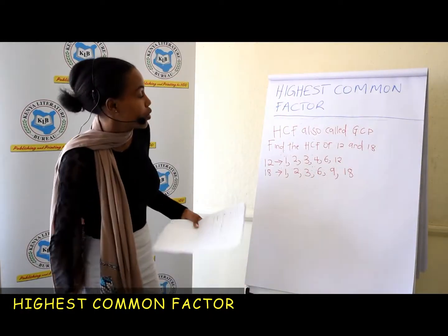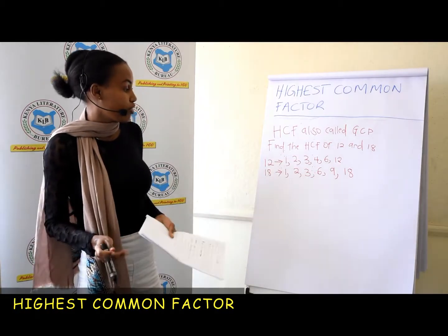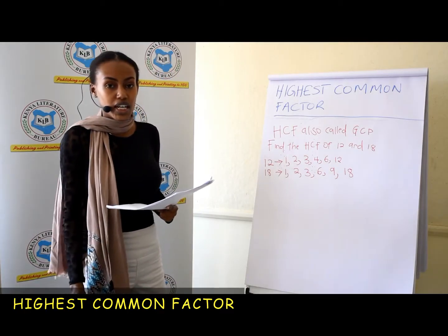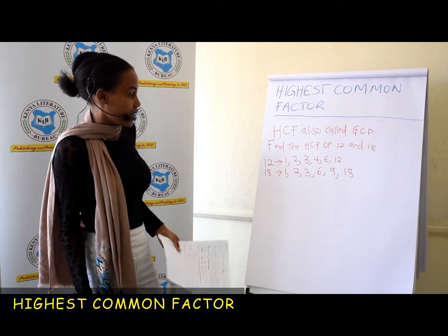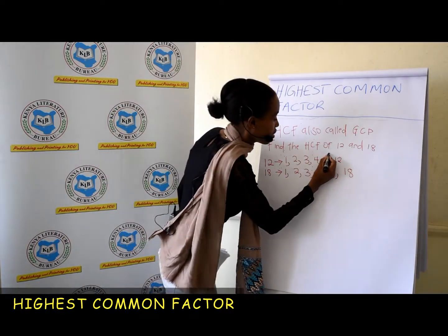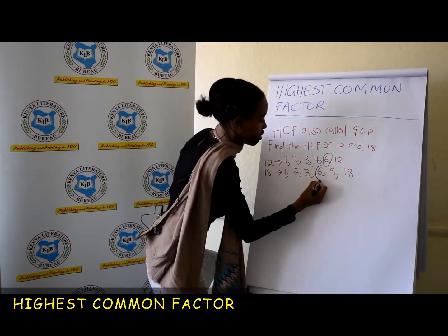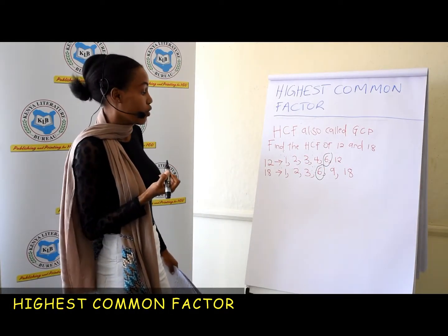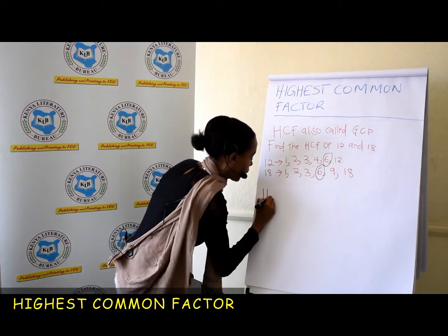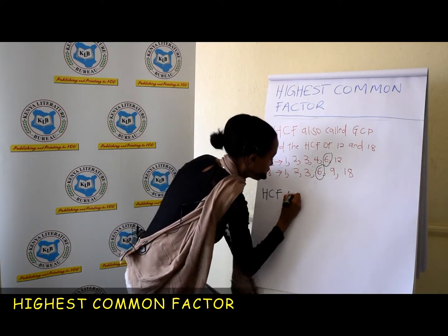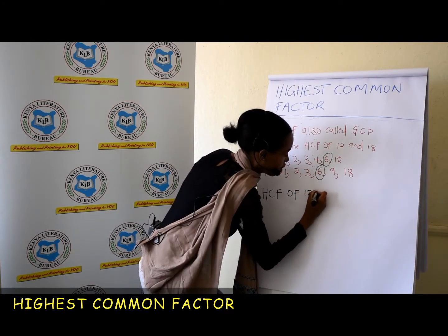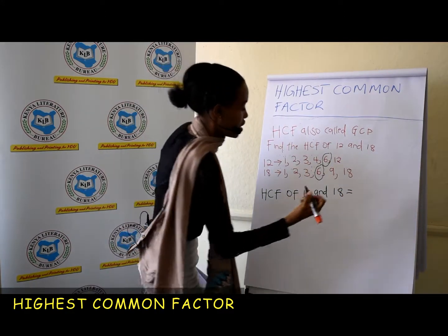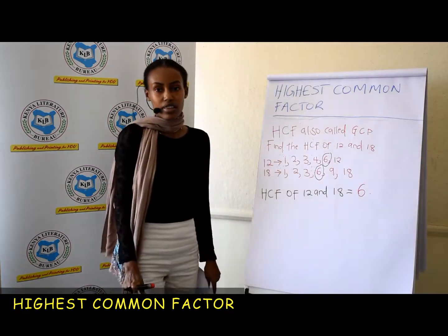So if you are told to find the highest common factor of 12 and 18, you look in these numbers and find what is common and also the highest. You will realize that we have a 6 here and we also have a 6 here. Therefore, the HCF of 12 and 18 is 6. Thank you.